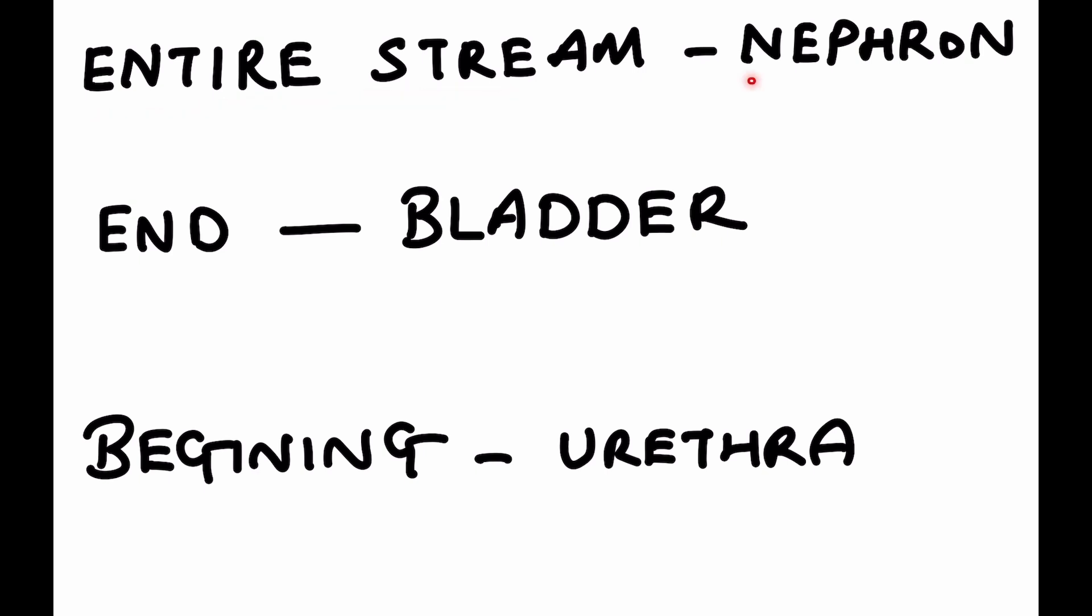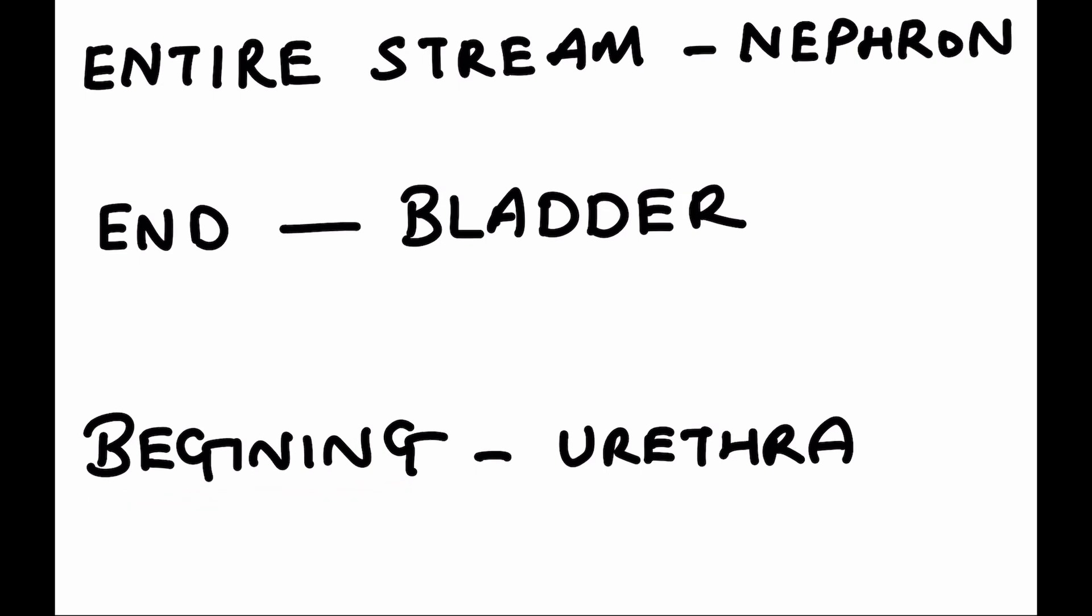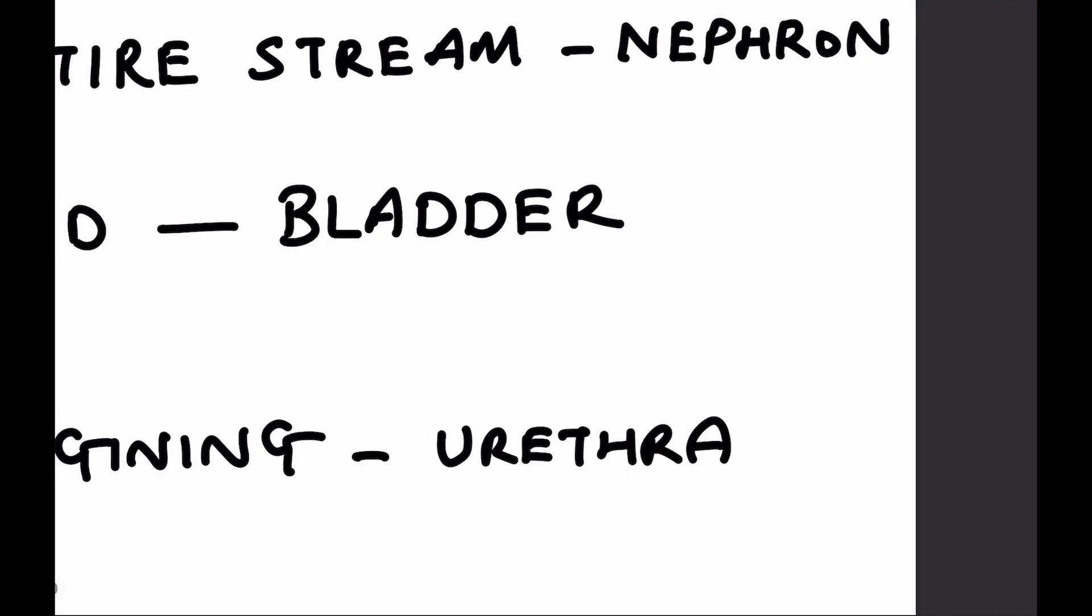So to quickly recap the entire lecture: if the bleeding occurs in the entire stream, it's because of bleeding from the nephron. If the bleeding is seen at the end of the urinary stream, it means that the bleeding has originated in the bladder. And if the bleeding is in the beginning of the urinary stream, that means the bleeding is from the urethra. Simple, right? I hope you found this clinical pearl helpful.